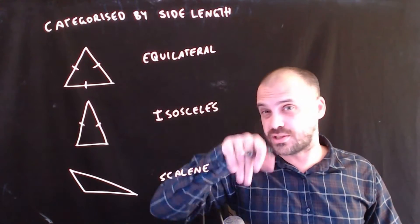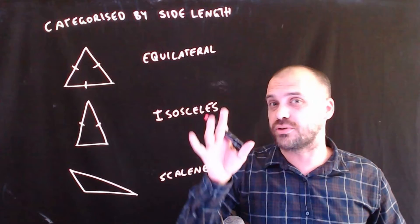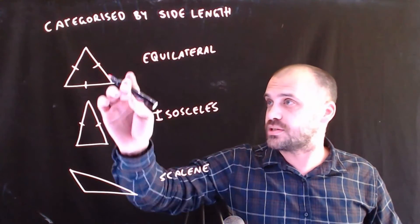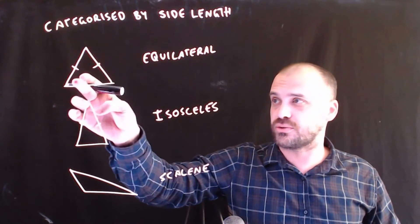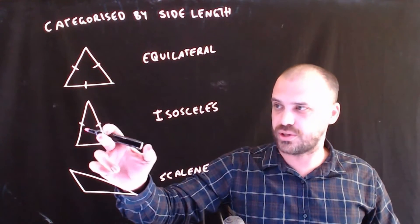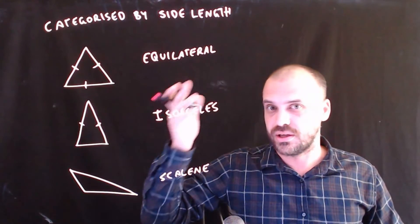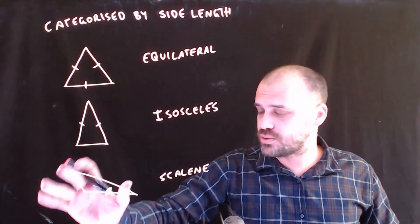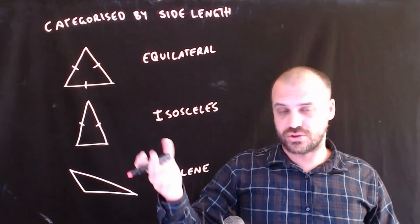Now, these can also be categorized the other way that we were talking about, which is categorized by angle size. So this is an acute triangle because they're all less than 90 degrees. This is also an acute triangle because they're all less than 90 degrees. And this one here is an obtuse triangle.